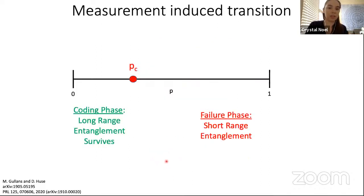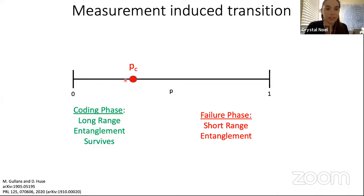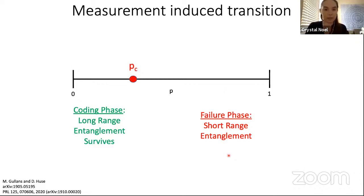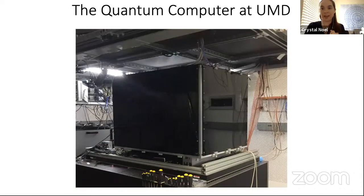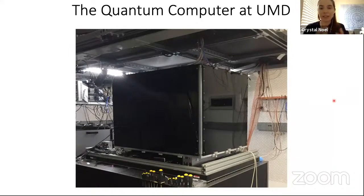The phase transition happens as we tune this measurement probability. Below the critical point, we have a coding phase where long-range entanglement survives — similar to an error-correcting code where your logical qubit survives despite some measurements. On the other side of the critical point, we have what you can call a failure phase, where only short-range entanglement survives and the measurements break up the system. We'd like to observe the properties of this transition using our quantum computer at the University of Maryland — shown here inside this black box, which provides protection from the environment, air currents, and temperature fluctuations.